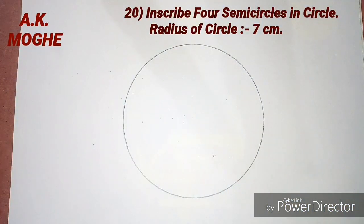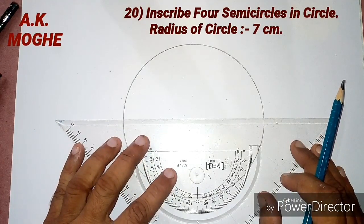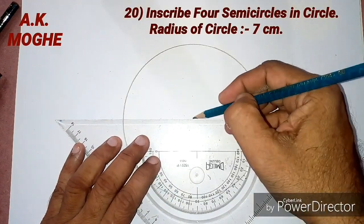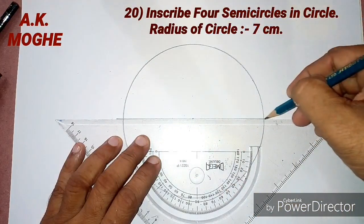Previously we saw how to inscribe 4 semicircles into a square. Here I am drawing a 7cm radius circle.